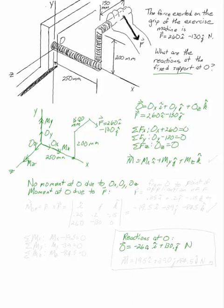Now in this case, the easiest way to figure out what that moment at O is, is to take the cross product. R is the vector from O to the point of application of F, which if I change it into meters is 0.25i plus 0.2j minus 0.15k meters. That's R.